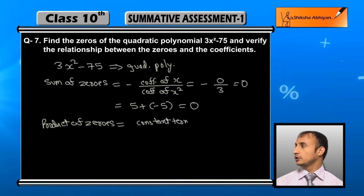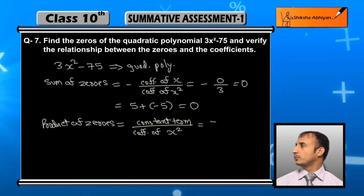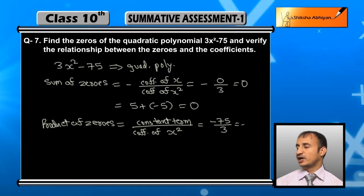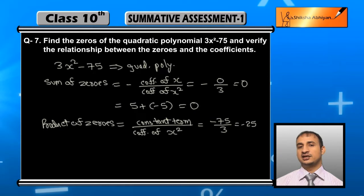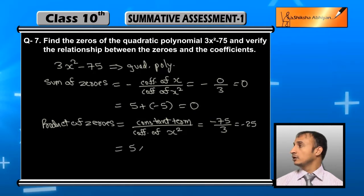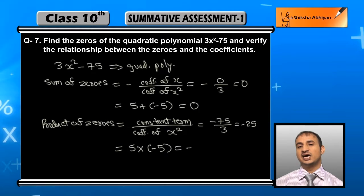This gives us minus 75 upon 3, which equals minus 25 when we divide 75 by 3. And if we take the product of our zeros, plus 5 times minus 5, this also equals minus 25. So you can see the relationship is verified.